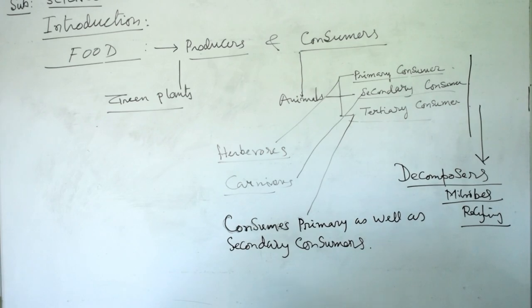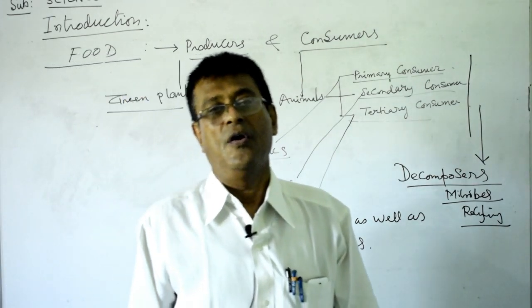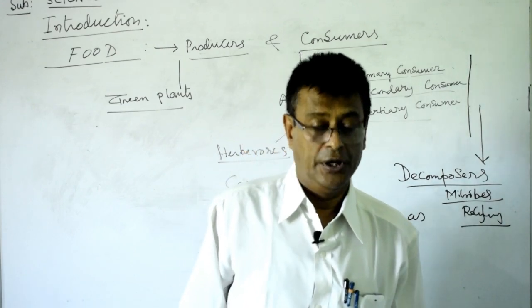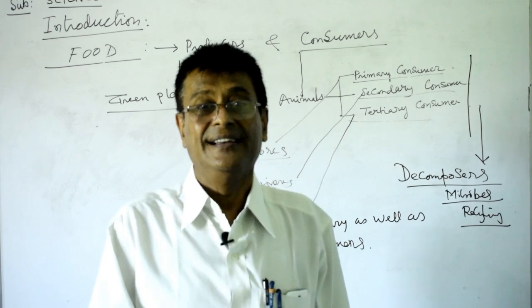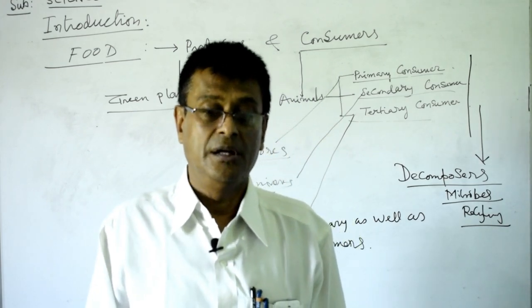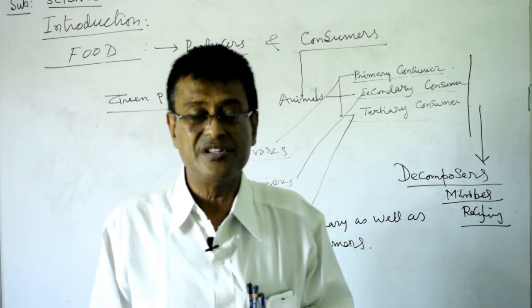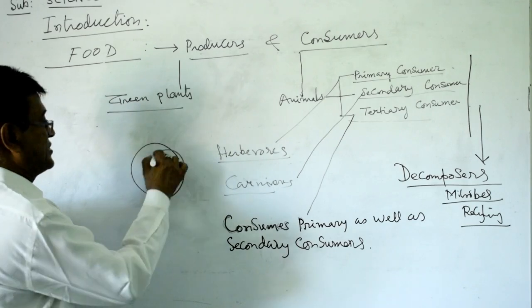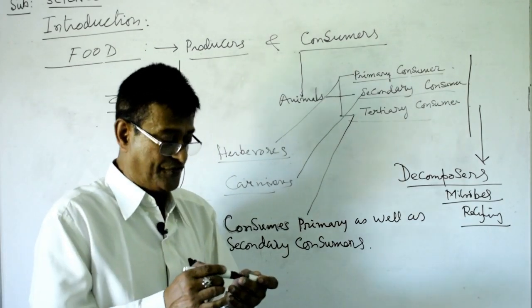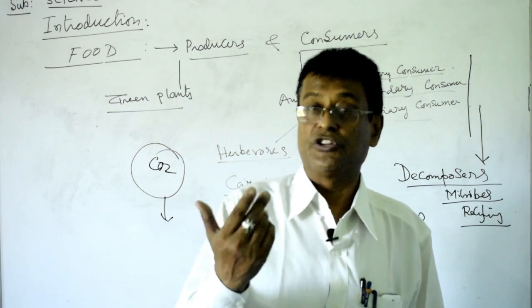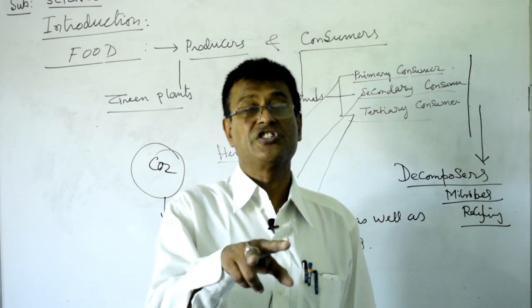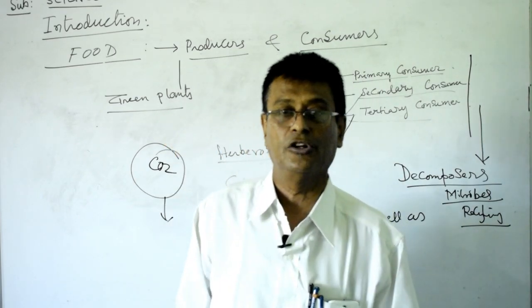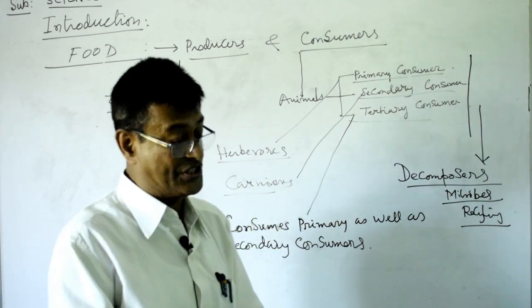We are absolutely dependent on plants. But are the plants dependent on us? Yes they are. During respiration we leave carbon dioxide, and this carbon dioxide is very much essential for the plants, because carbon dioxide is one of the raw materials for food preparation. It is taken by the green plants through the stomata — the openings of the stomata. The stomatal opening has two guard cells which close and open.